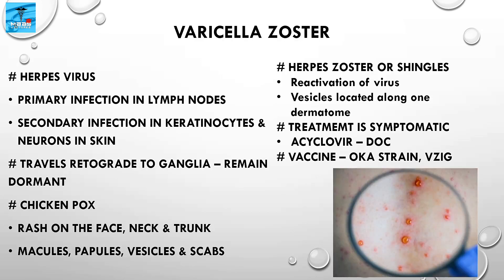The immunoglobulin is indicated for neonates born to mothers suffering from chickenpox. As a quick recap: Varicella Zoster Virus is a herpes virus that causes primary infection in the lymph nodes and secondary infection in keratinocytes and neurons. From the neurons in the skin, it travels retrograde to the ganglia, where it remains dormant.